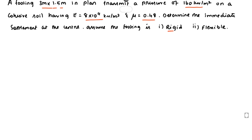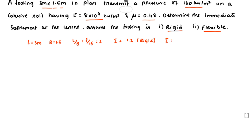We need to assume the footing is both rigid and flexible. Case one is the rigid foundation and case two is the flexible foundation. Given L = 3 m and B = 1.5 m, the L/B ratio is 3/1.5 = 2. From the table, the influence factor I = 1.2 for rigid foundation and I = 1.31 for flexible foundation.